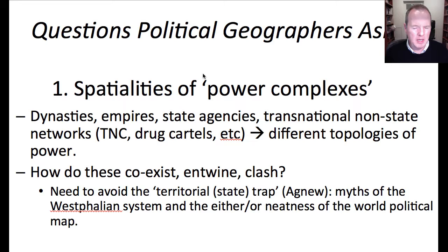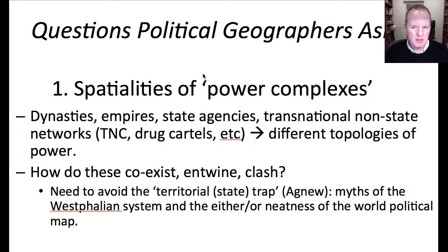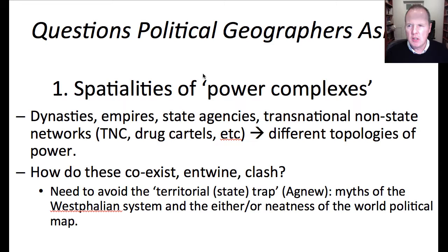And then we have transnational non-state networks — advocacy networks, transnational corporations grounded in certain places but with footprints in multiple locations and staff from very different nations. We also have illegal cartels and criminal gangs that operate on a transnational basis, moving product across borderlines. They themselves are power complexes and they create particular geographies. What you get are different topologies of power operating here — I'm using the language of geographer John Allen. We need to think about the spatial footprint created by these different power complexes and how spaces themselves are part of the operation of power.